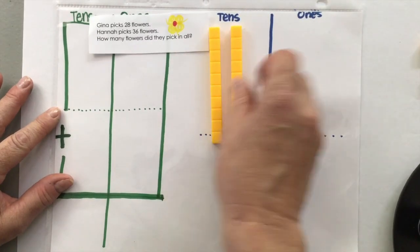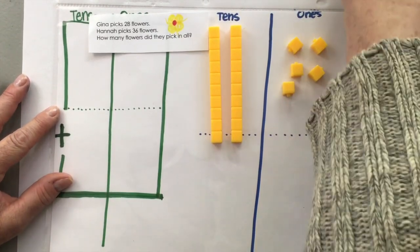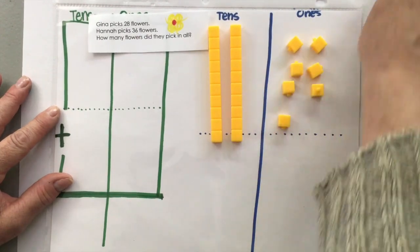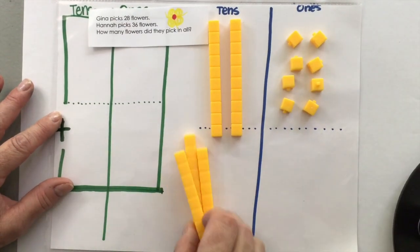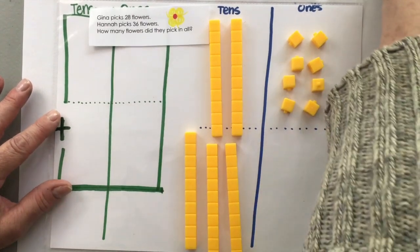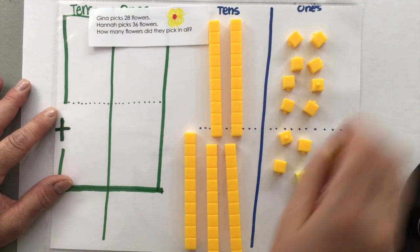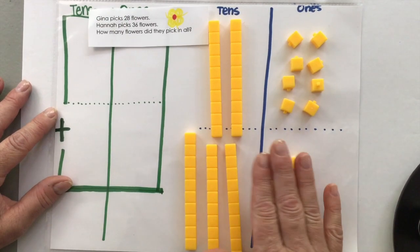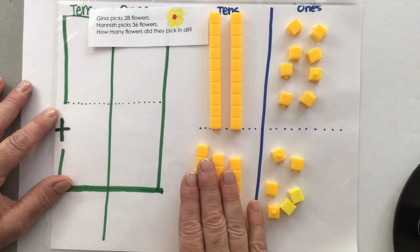Gina picks 28, two, three, four, five, six, seven, eight. And Hannah picks 36, 10, 20, 30. One, two, three, four, five, six. Okay. So we have 28 and 36.